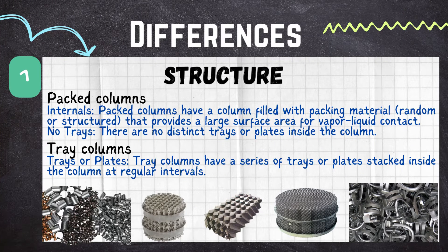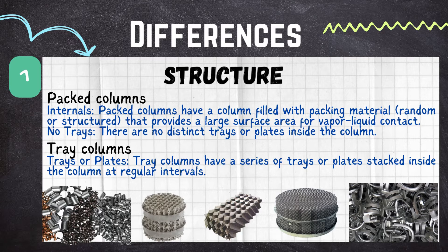In the packed column there are no distinct trays or plates inside the column — the whole column is filled with random and structured packing. In contrast, the tray column has a series of trays or plates stacked into the column at regular intervals. So the first key difference in structure is that the packed column uses random or structured packing, while the tray column uses trays or plates stacked at regular intervals.